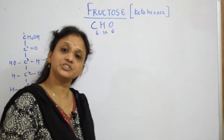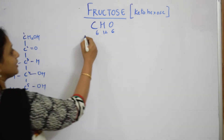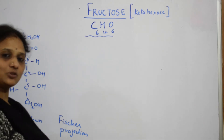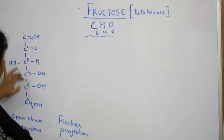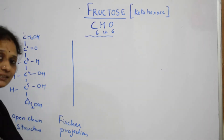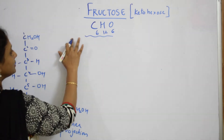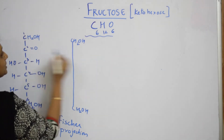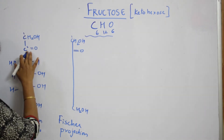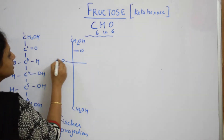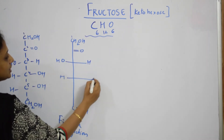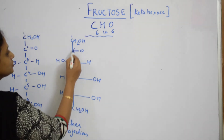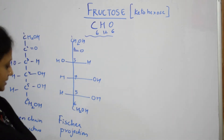After the open chain structure, we write the Fischer projection formula — the same as we did for glucose. Fischer projection is basically the open chain structure; we just draw the carbon skeleton without writing the carbon atoms explicitly. The first and last carbons are CH2OH. The second carbon has C double bond O, third has OH and H, fourth has H and OH, fifth has H and OH. That is your Fischer projection formula — numbered one, two, three, four, five and six.